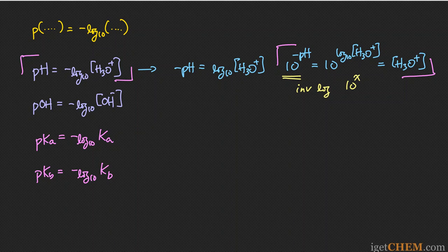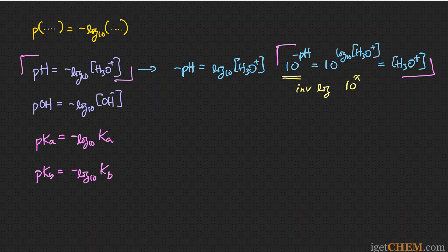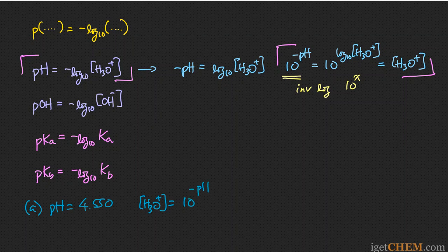The problem gives a buffer with pH = 4.550. To calculate the H3O+ concentration, we exponentiate negative pH to base 10: 10 to the minus 4.550. Punching that into the calculator gives 2.81838... × 10⁻⁵.